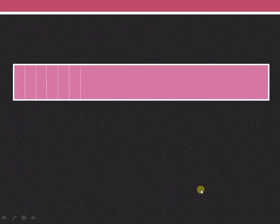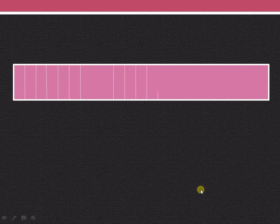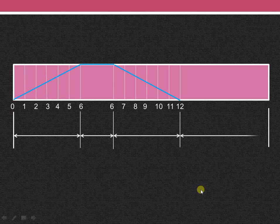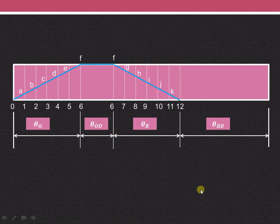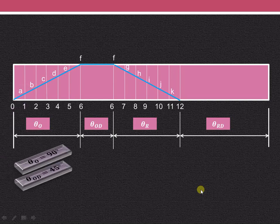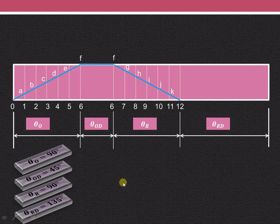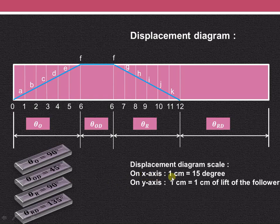Now on x-axis we take crank angle and on y-axis we take the lift or stroke of the follower. On x-axis we have taken this theta o, that is outstroke is of 90 degree. Then by taking some suitable scale of this displacement diagram, on x-axis we are having the scale that we have chosen is 1 cm equals 15 degree.